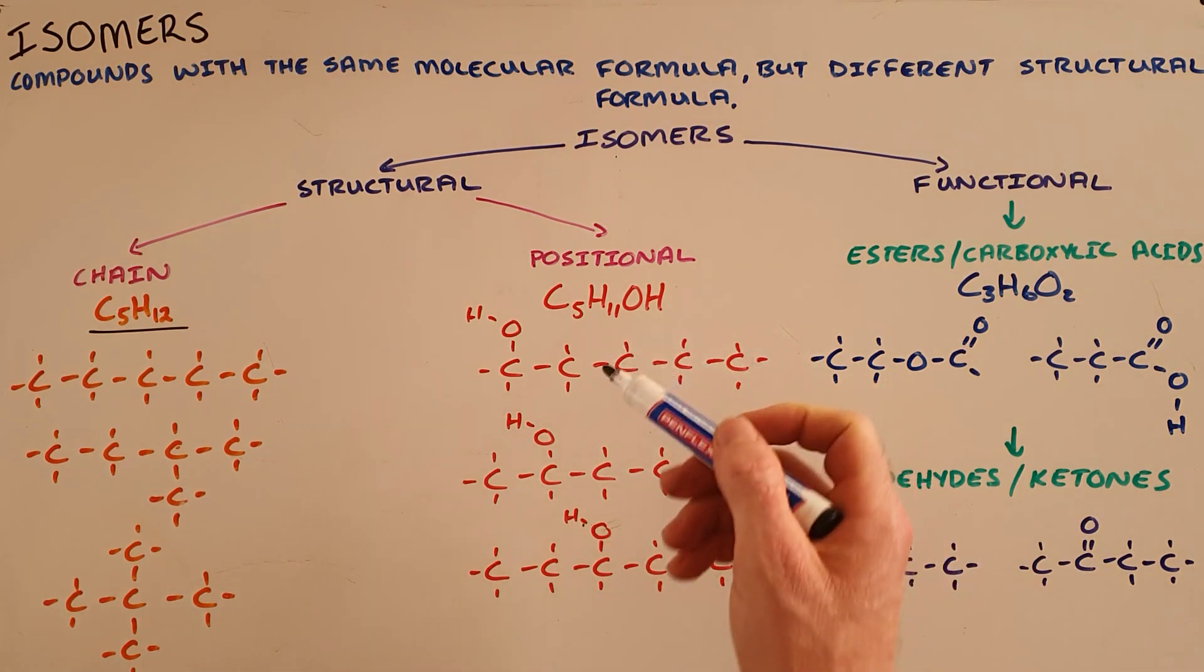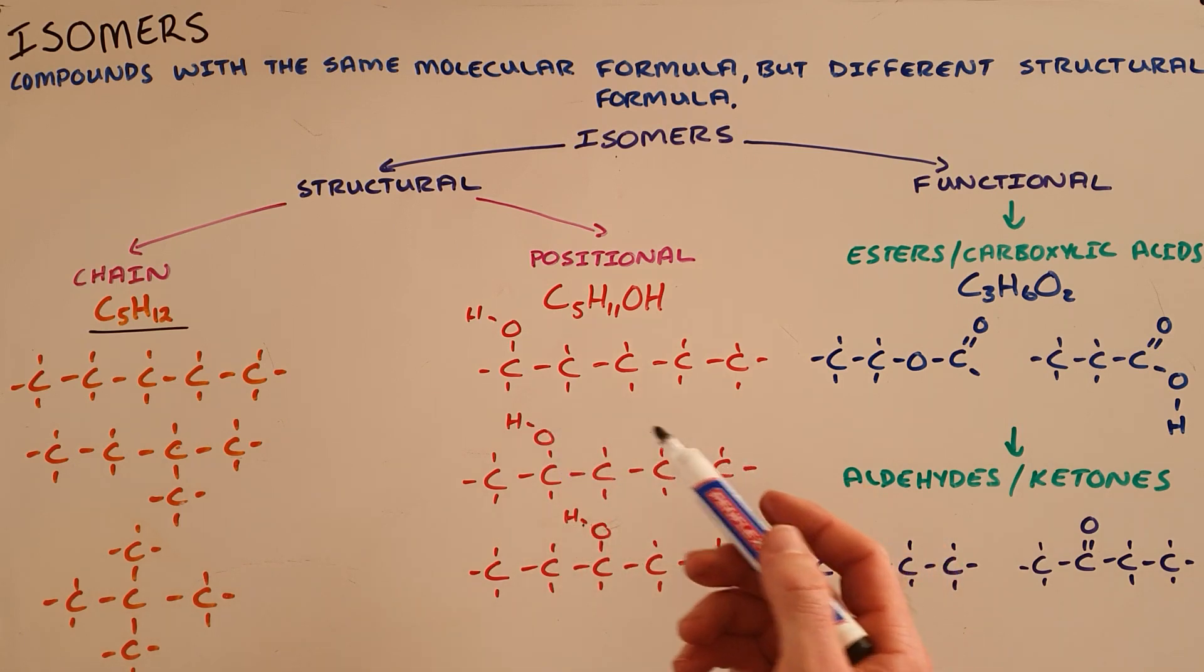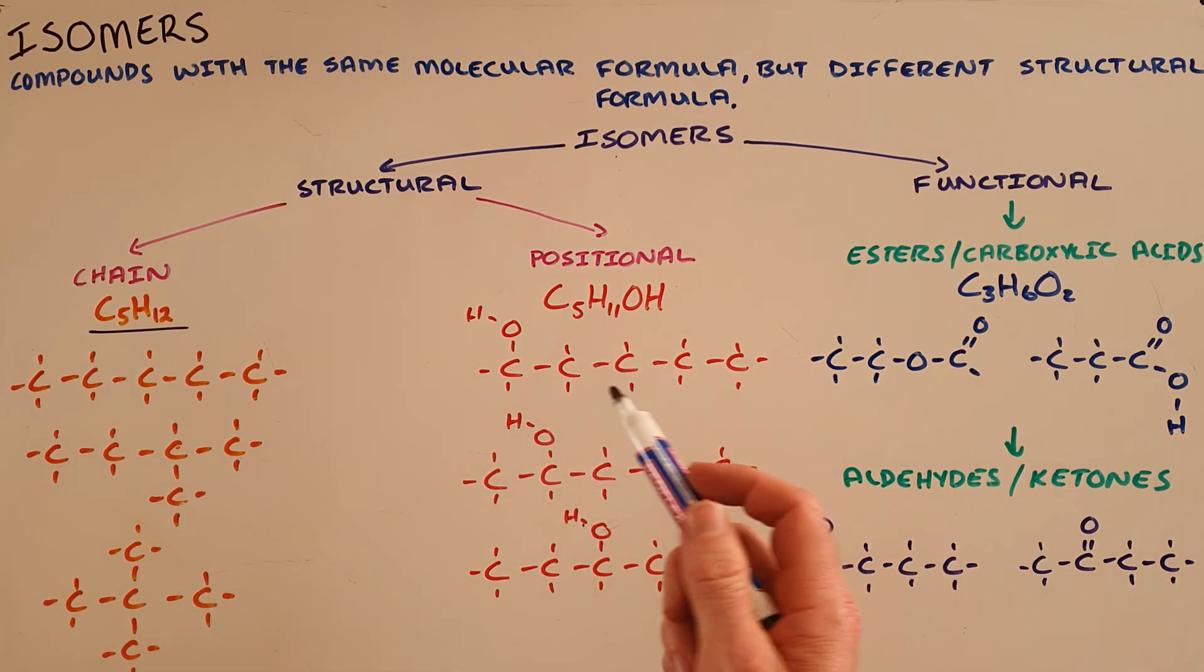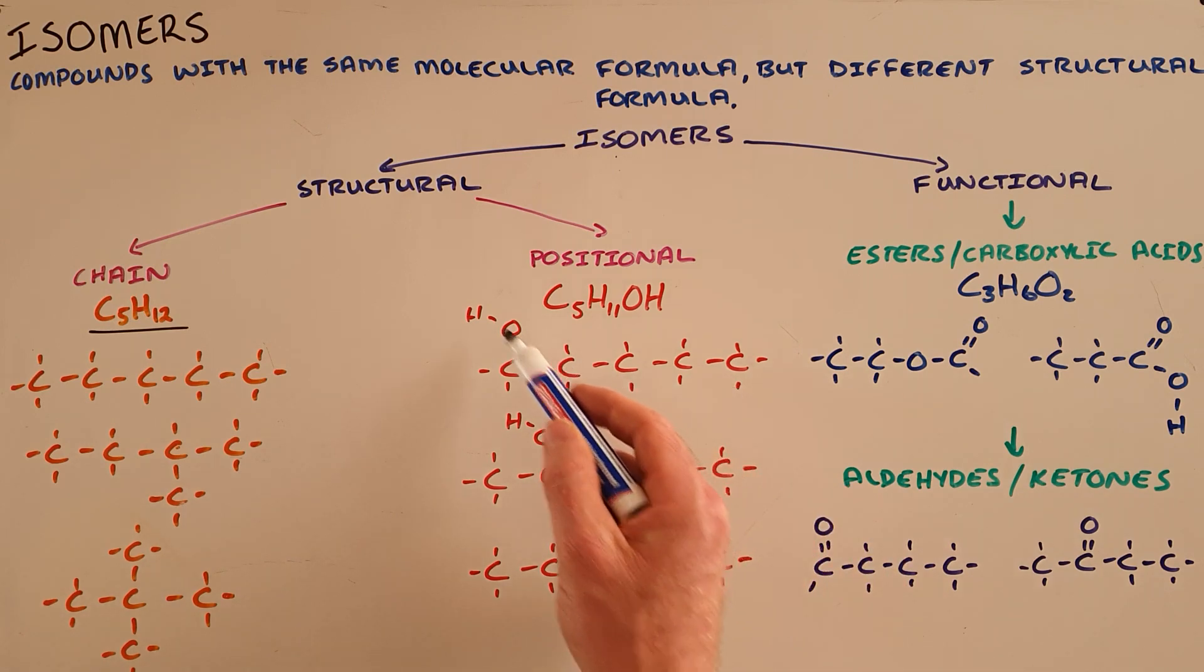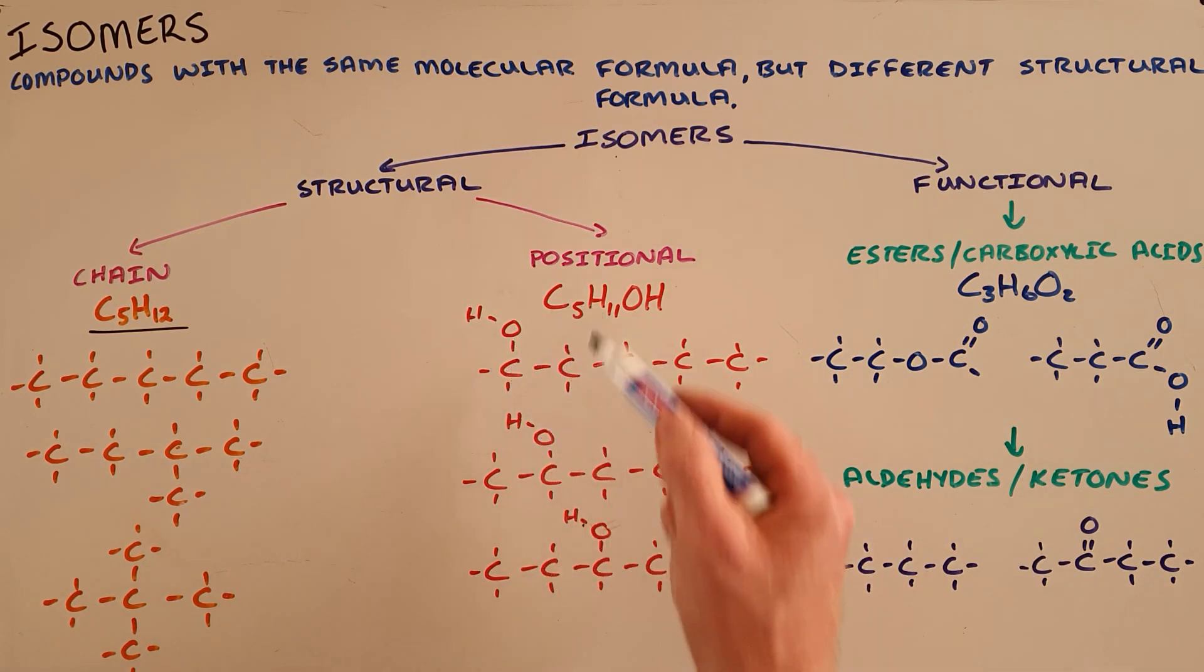A positional isomer is one where the position of one of the branches or one of the functional groups has changed. So here we have an alcohol where in the first case the hydroxyl group is on the first carbon, in the second case the chain remains the same but the hydroxyl group is now located on the second carbon.